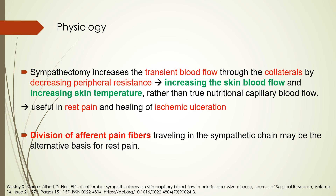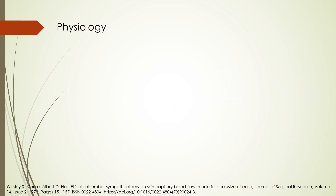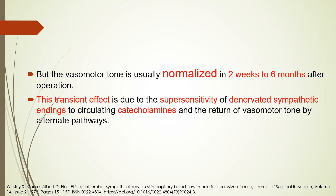Therefore, there is no physiological basis for using lumbar sympathectomy for patients with intermittent claudication, as we already have maximum arterial vasodilation. It is useful in rest pain relief and the healing of ischemic ulcers. Division of afferent pain fibers traveling through the sympathetic chain may also be an alternative basis for rest pain relief. However, the vasomotor tone is usually normalized within 2 weeks to 6 months after the operation, and this transient effect is due to hypersensitivity of the denervated sympathetic endings to circulating catecholamines.